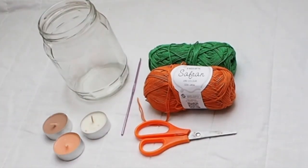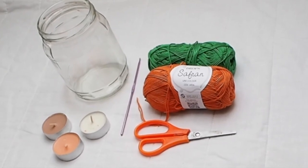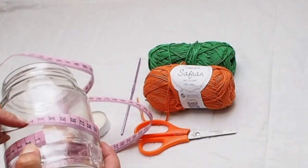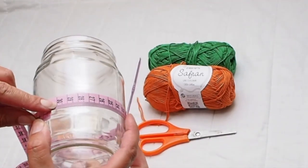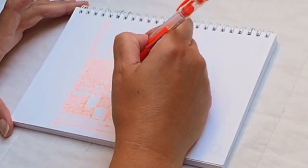If you have some orange and green yarn, scissors, a crochet hook, and some candles, you can save yourself all the mess of carving out real pumpkins and you can crochet a Halloween Jack-O-Lantern.